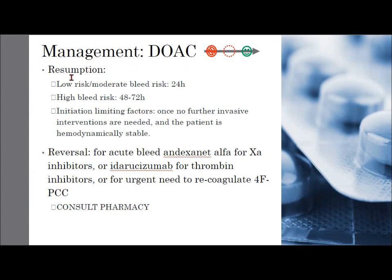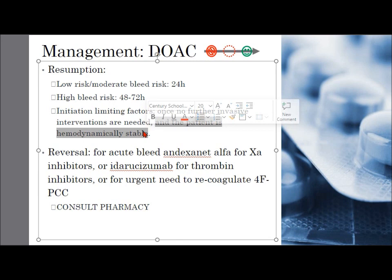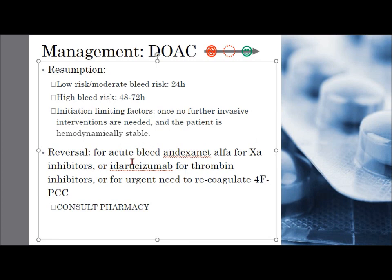For resuming a DOAC: low to moderate bleed risk procedure, wait one day; high risk, wait at least two days. Other limiting factors include ensuring no further invasive interventions are needed, confirming no return to the OR is required, and that the patient is hemodynamically stable — you can't put a patient back on a DOAC if they're actively bleeding. For reversal agents, if somebody is acutely bleeding you'll go for the specific reversal agents. If there's an urgent need to reverse coagulation for an operation, fresh frozen plasma is often used per facility protocol — these reversal agents are not thrown around casually, they're for acute bleeds.